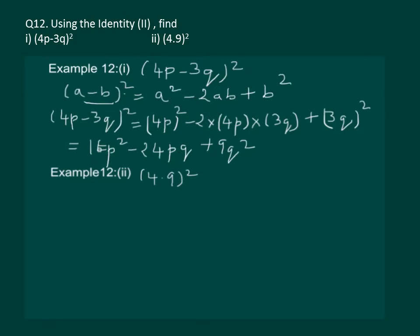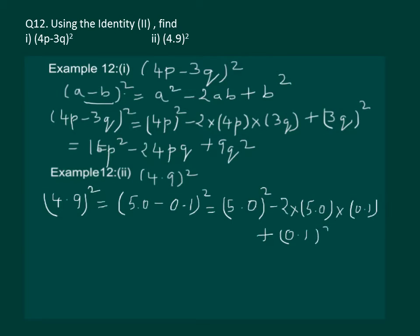We start with writing 4.9 whole square is same as 5.0 minus 0.1 whole square and substitute in our identity. We get 5.0 whole square minus 2 into 5.0 into 0.1 plus 0.1 whole square. This will give us 25.0 minus 1.0 plus 0.01 which is equal to 24.01.